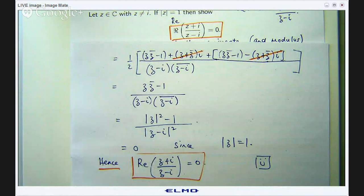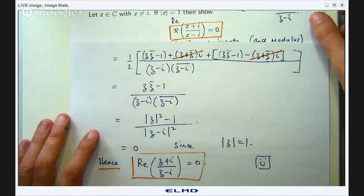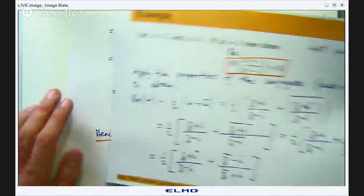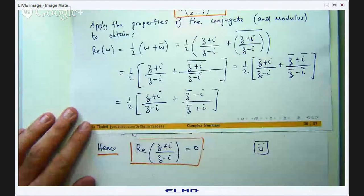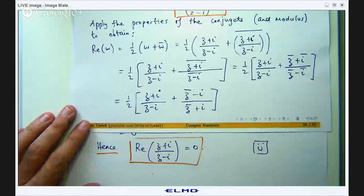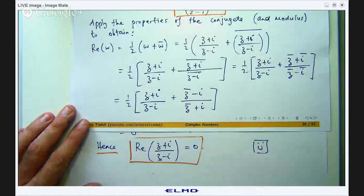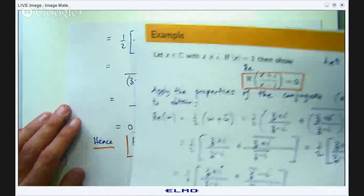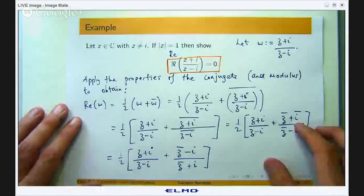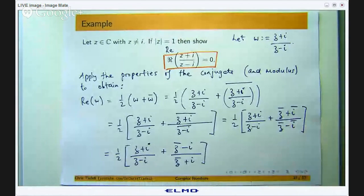So why is that a good example? Because essentially we used a lot of properties from both the modulus and the conjugate to get where we wanted to go. Okay so that is a good example of using all or a lot of those properties to sort of remind you of them and get you using them in your mathematics.